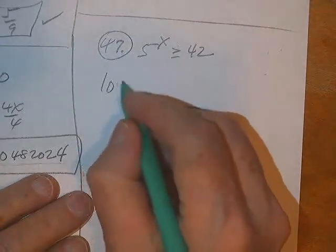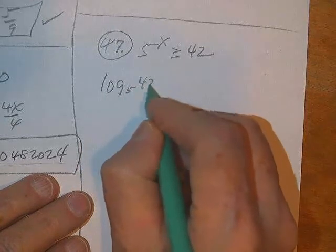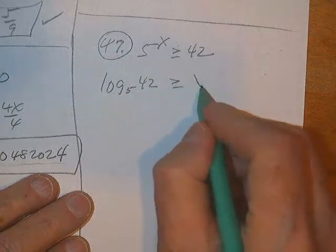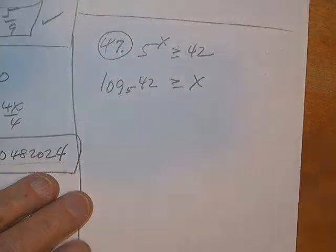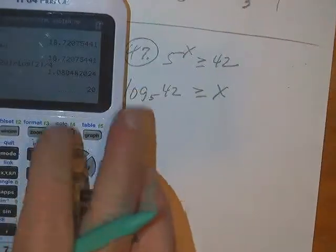So we can't make the bases the same, so I'm going to have to do log base 5 of 42. And this sign is probably wrong. We'll check it and make sure here in a second.